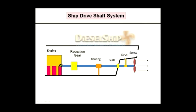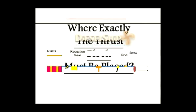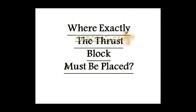As mentioned earlier, the thrust block must be located after the crankshaft, but it can be located anywhere along the shafting system. What decides exactly where the thrust block must be located on the entire shafting system? For that, we have to know about nodes and anti-nodes.